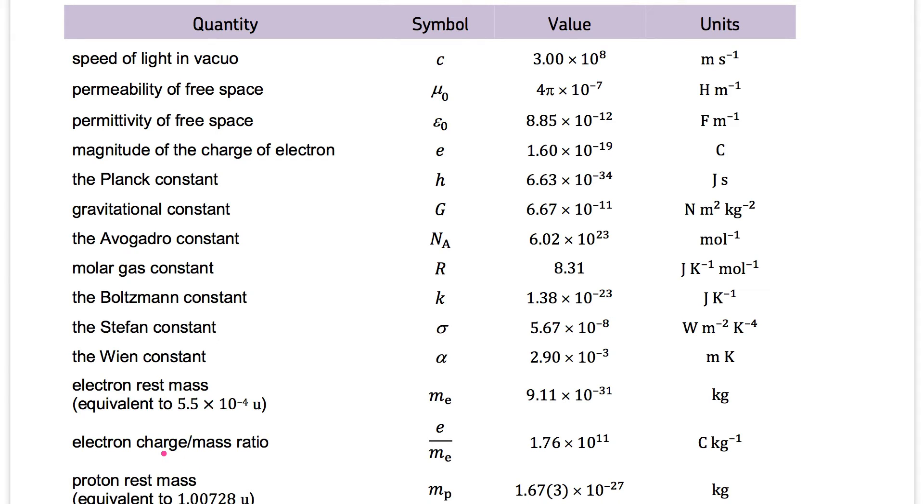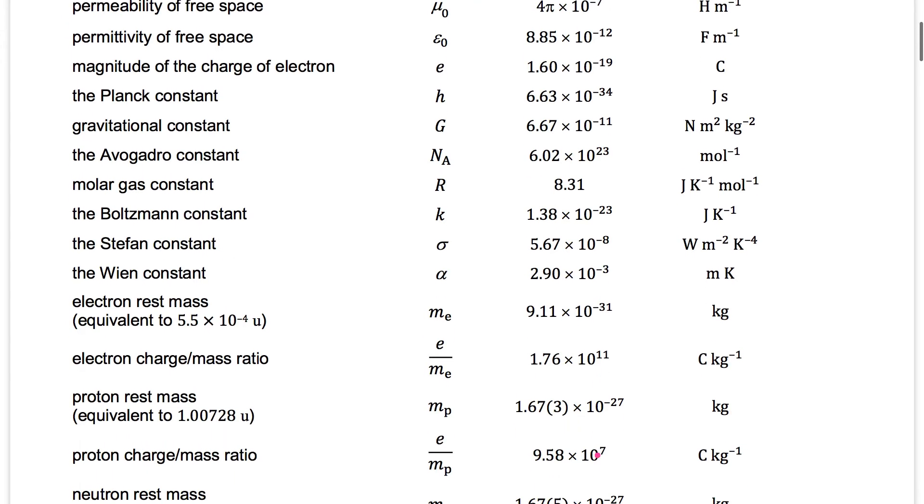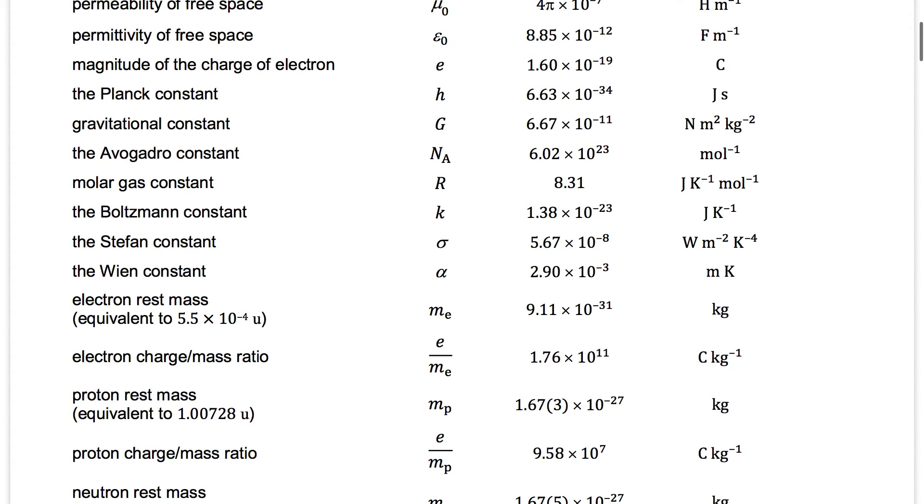Electron charge mass ratio. So the ratio of the electron charge, which is 1.6 times 10 to power minus 19, to the mass of the electron, which is 9.11 times 10 to power minus 31, will give you 1.76 times 10 to power 11. This must be the charge, so it's coulombs per kg.